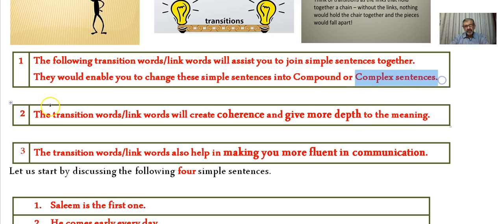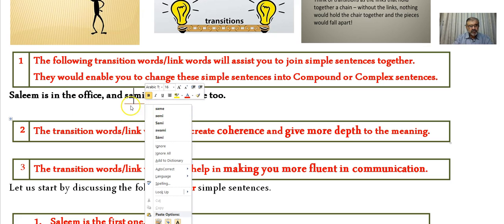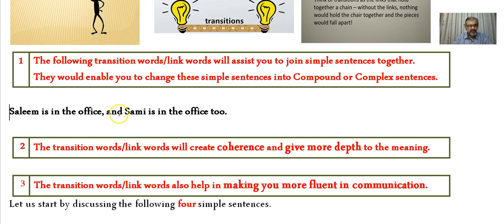Some of you might ask: is there a difference between compound and complex sentences? Here are two simple examples. 'Salim is in the office and Sammy is in the office too' — this is a compound sentence because it is basically two simple sentences joined together by a conjunction, in this case 'and'.